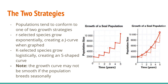The two strategies match up with the two graphs we saw earlier. r-selected species grow exponentially. They're called r-selected because r stands for rate, as in growth rate. The strategy they have selected maximizes growth rate, so they constantly grow, which leads to exponential growth that is always increasing. k-selected species, on the other hand, grow logistically.